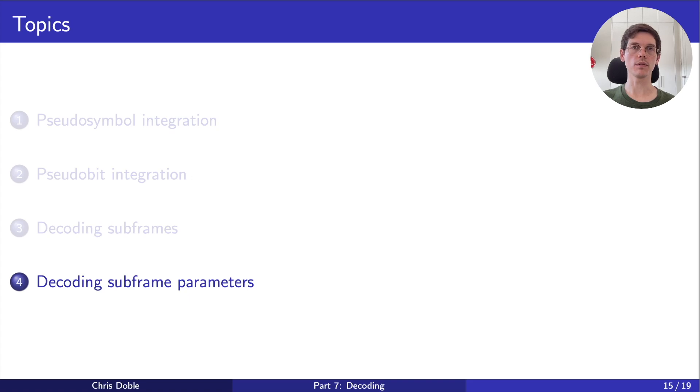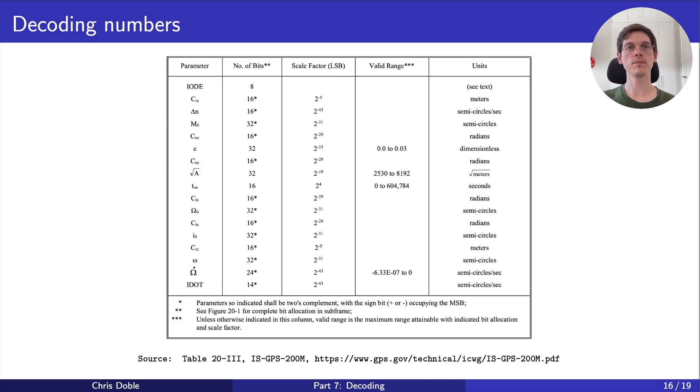Numbers are a little bit more complicated, though. The spec contains tables, defining the properties of each number. For example, this table describes the numbers within subframes 2 and 3. You can see that for each number, it lists the number of bits it occupies, whether it's in 2's complement representation, that is, whether it can be negative, and something called the scale factor.